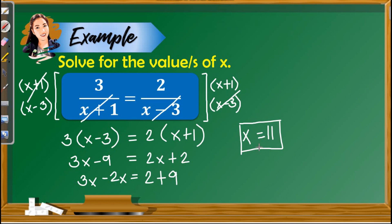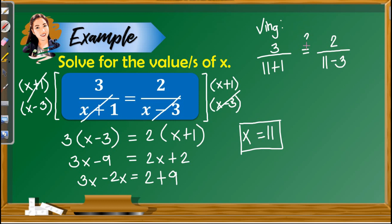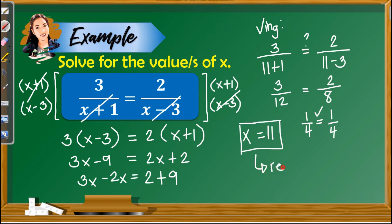Now, to check if this is real or extraneous, let us substitute x equals 11 into our original equation. For checking: 3 over x plus 1 becomes 3 over 11 plus 1, and 2 over x minus 3 becomes 2 over 11 minus 3. So we have 3 over 12 equals 2 over 8. In lowest terms, 3 over 12 is 1 fourth, and 2 over 8 is also 1 fourth. So they are equal. Therefore, x equals 11 is our real solution.